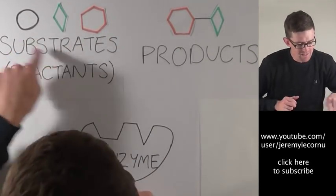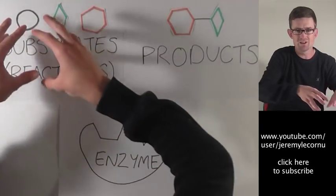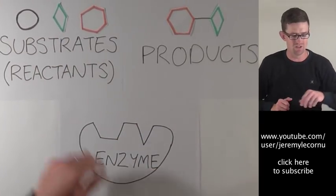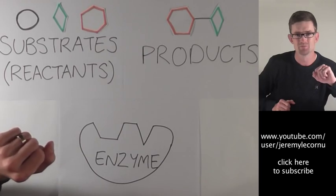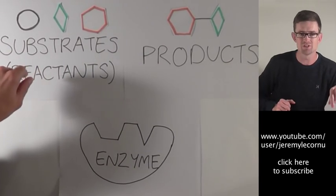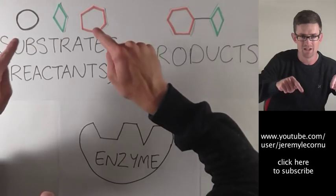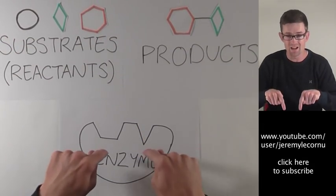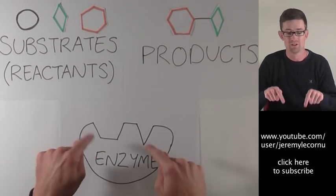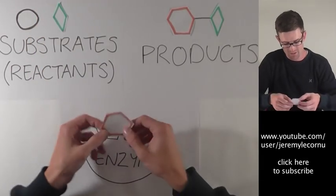Here's our substrates here. These are the things that are going to go into this reaction. I've got three substrates. I don't think you've had too much difficulty working out which substrates are actually going to participate in the reaction with this enzyme. That's right.